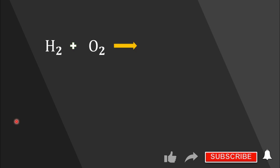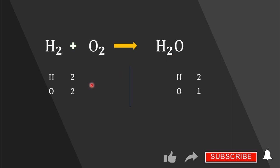Now let's look at another example: hydrogen reacts with oxygen to produce H₂O, known as water. Our first step is to count the number of atoms in the reactant side — there are two hydrogen atoms and two oxygen atoms. Now let's count the number of atoms in the products. By considering the subscript of the H₂O molecule, we can say there are two hydrogen atoms and one oxygen atom. Now let's see which atoms are not balanced — hydrogen atoms on both sides are equal, but oxygen atoms are not balanced.